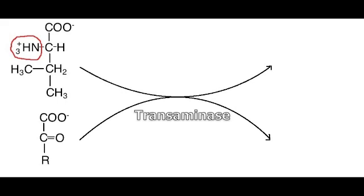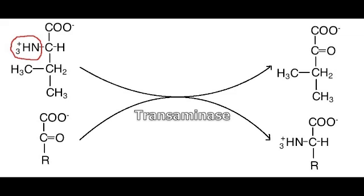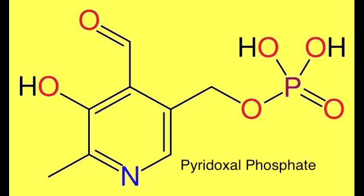The reaction consists in the transfer of the amino group to the alpha-carbon of the alpha-ketoacid. Therefore, we have the transformation of the amino acid into its corresponding alpha-ketoacid, because the amino group goes away and is substituted by a keto group — C double bond O — whilst the alpha-ketoacid is transformed into its corresponding amino acid.